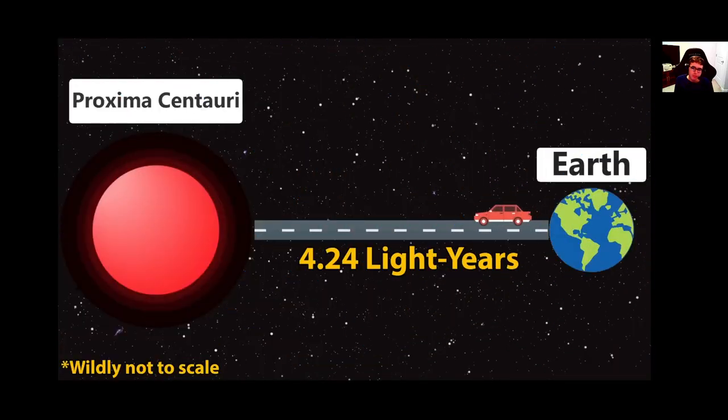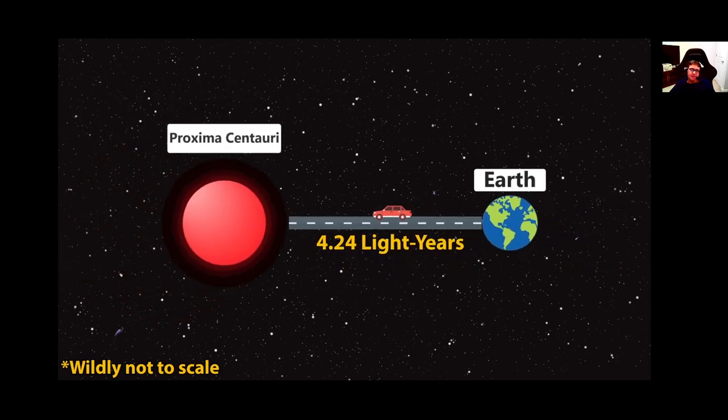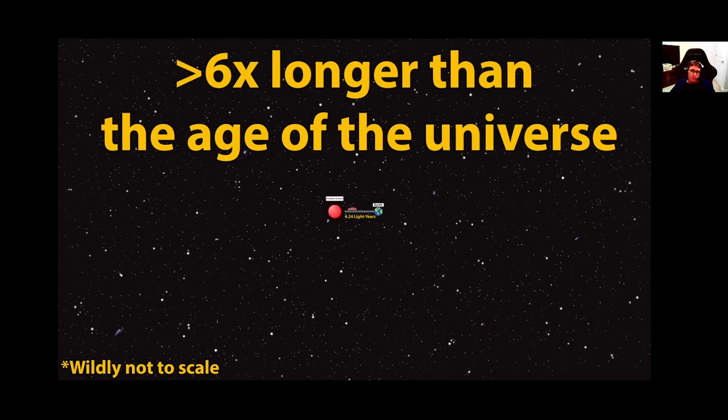In other words, if you drove your car at 100 kilometers an hour like in our previous example to the moon. You would never even get there if you drove my car. It would take over 6 times longer than the entire age of the universe is just to finally get there. And it wouldn't even exist still when you arrived.